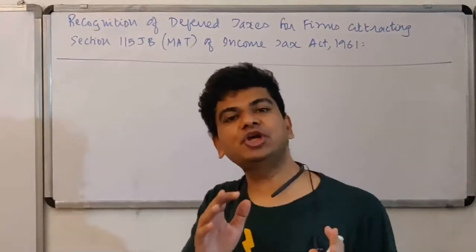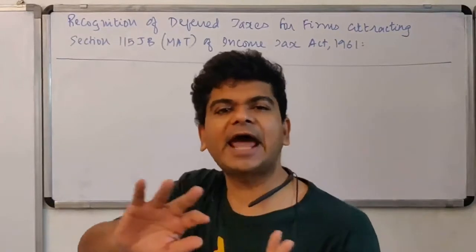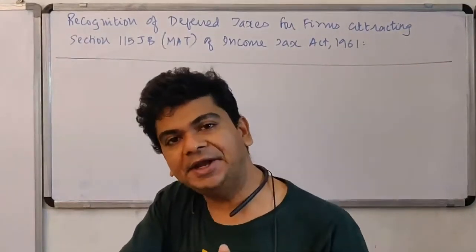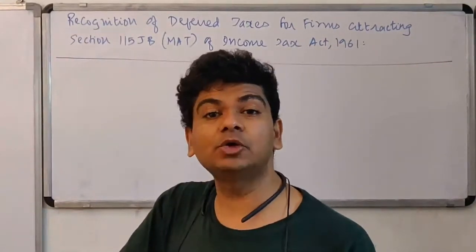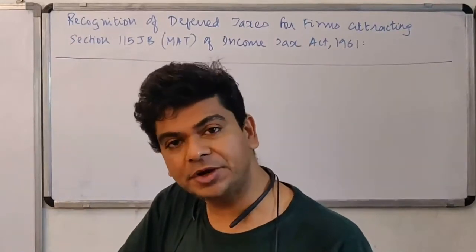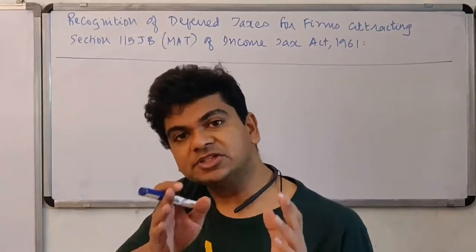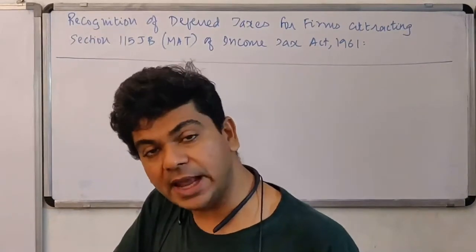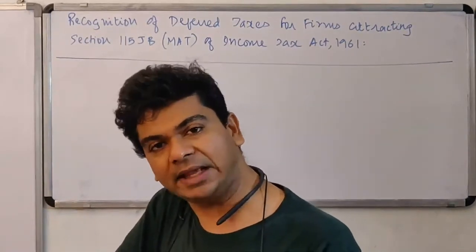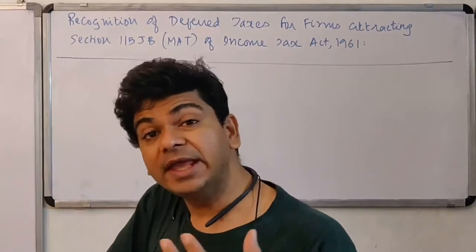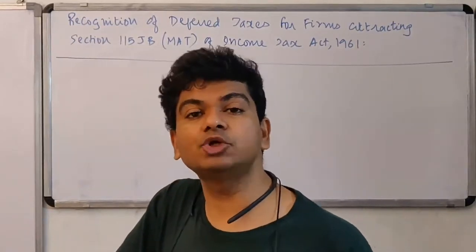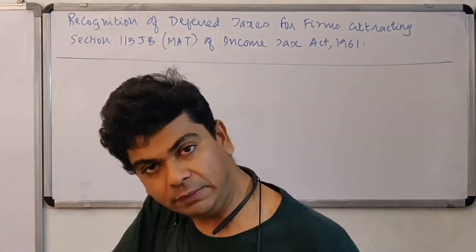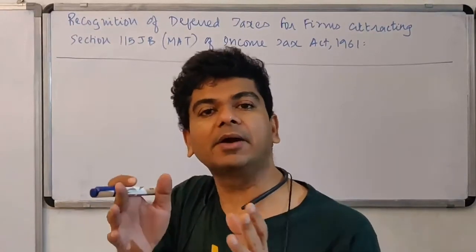Section 115JB suggests that you ignore all the tax provisions which are there in the entire Act and calculate tax only as per Section 115JB. Section 115JB introduces a concept of book profit, and on book profit the income tax will be calculated. It's very natural whatever actual tax that you are paying, that will turn out to be the current tax.